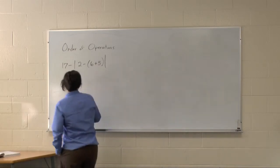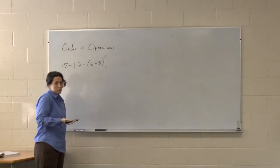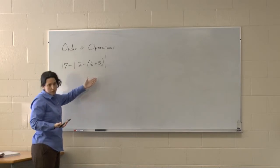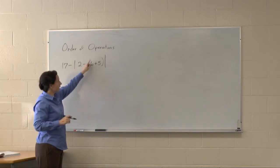Also, if you have multiple operations, multiple grouping symbols, what would you do? Here you have a couple of choices. You could distribute this negative sign, right?